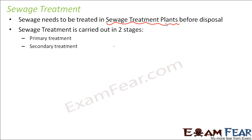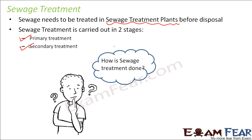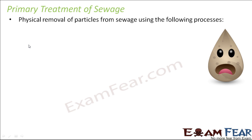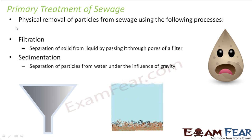Sewage treatment is carried out in two stages: primary treatment and secondary treatment. The focus in sewage treatment is that whatever toxic substances are present in the sewage, they need to be converted into less toxic substances. In primary treatment, we do physical removal of particles from sewage. Whatever extra particles are present in the sewage are removed by filtration or sedimentation. Filtration is the process where a mixture of solid and liquid is passed through a filter — the liquid passes through but the solid remains.